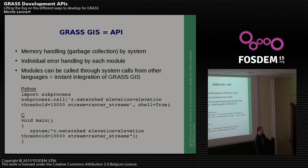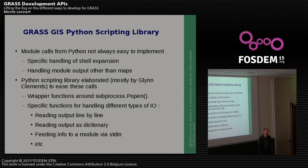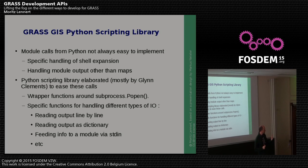You can call GRASS and its modules through any language that can do system calls, and here you see two examples in Python and in C. However, this approach has some disadvantages: you sometimes need to be well-informed about how to handle shell expansion, and it's not always easy to handle output of the models when they're not maps. You really have to know how to do that in your respective programming language.